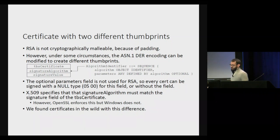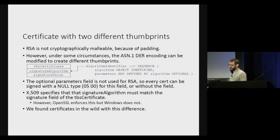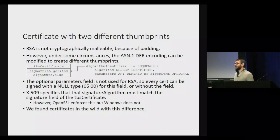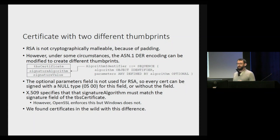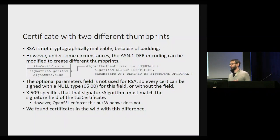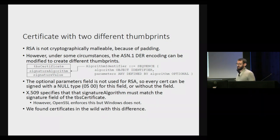Specifically, a certificate is laid out as a TBS certificate, a signature algorithm, and a signature value. The signature algorithm is an algorithm identifier sequence whose second field is optional, so there are two different ways it could be encoded — with a null type or without the field. The X.509 standard specifies that the signature algorithm must match the signature field of the TBS certificate, but this is not actually enforced in Windows.